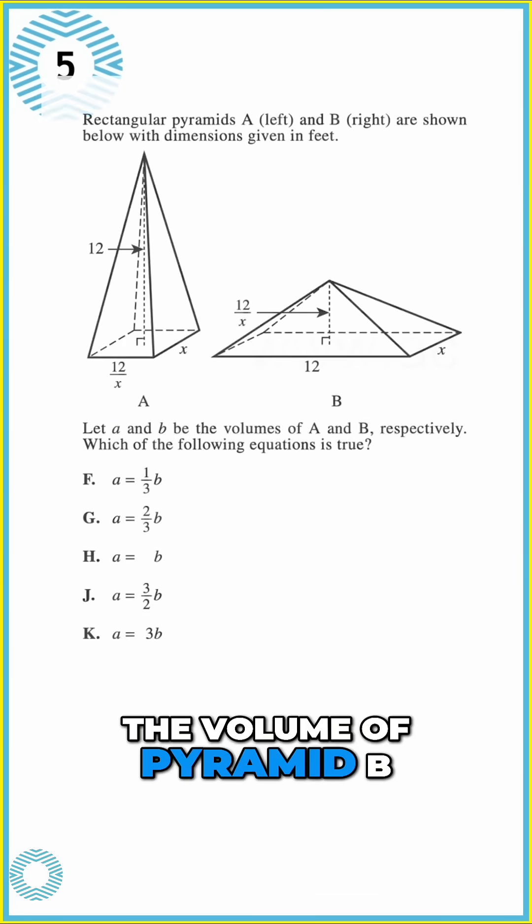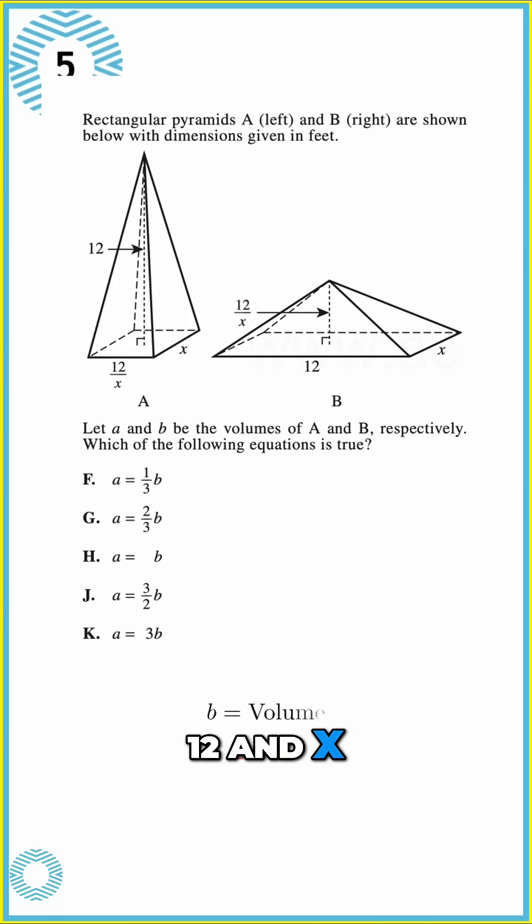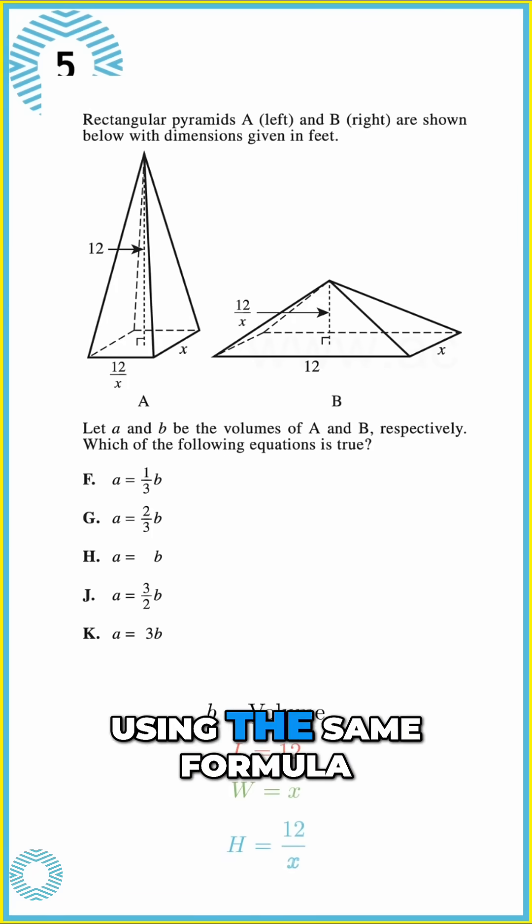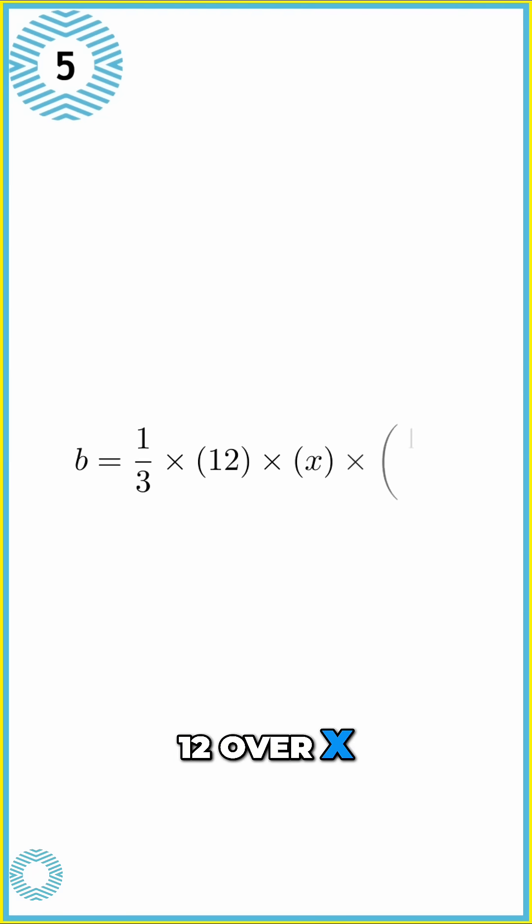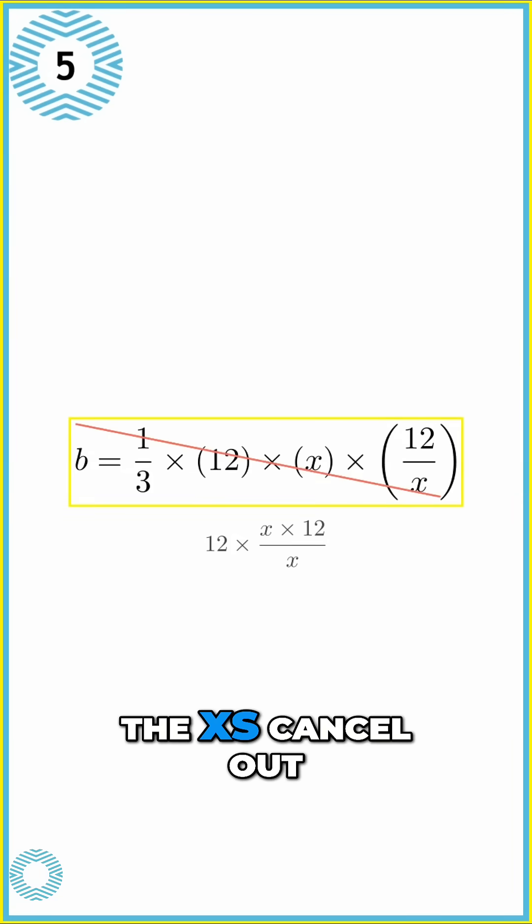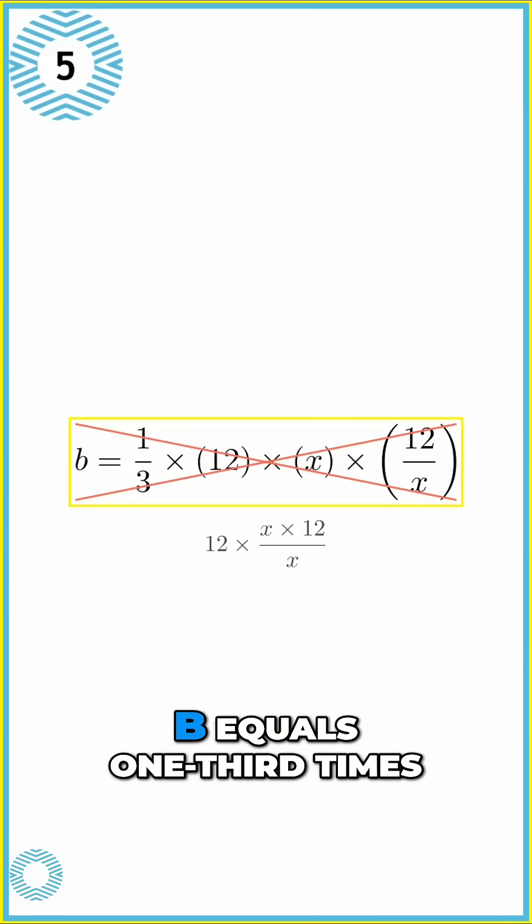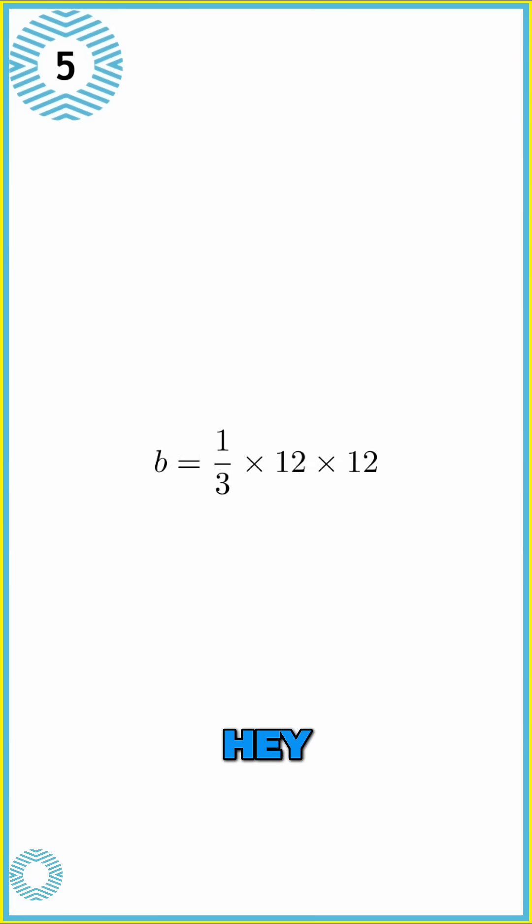Now for B, the volume of pyramid B. Its base dimensions are 12 and X, and the height is 12 over X. Using the same formula, B equals one-third times 12 times X times 12 over X. Again, look at the terms being multiplied. 12 times X times 12 over X. The X's cancel out here too. We are left with B equals one-third times 12 times 12. Hey! That looks familiar.